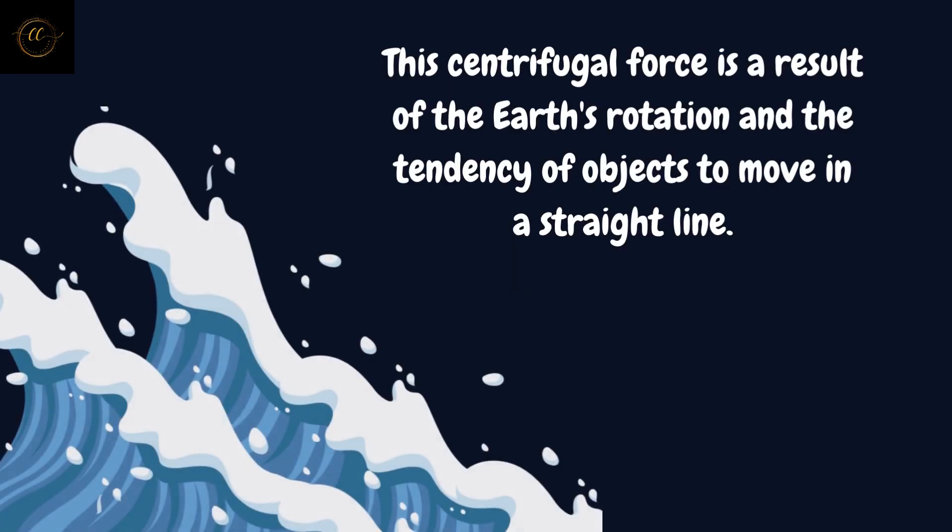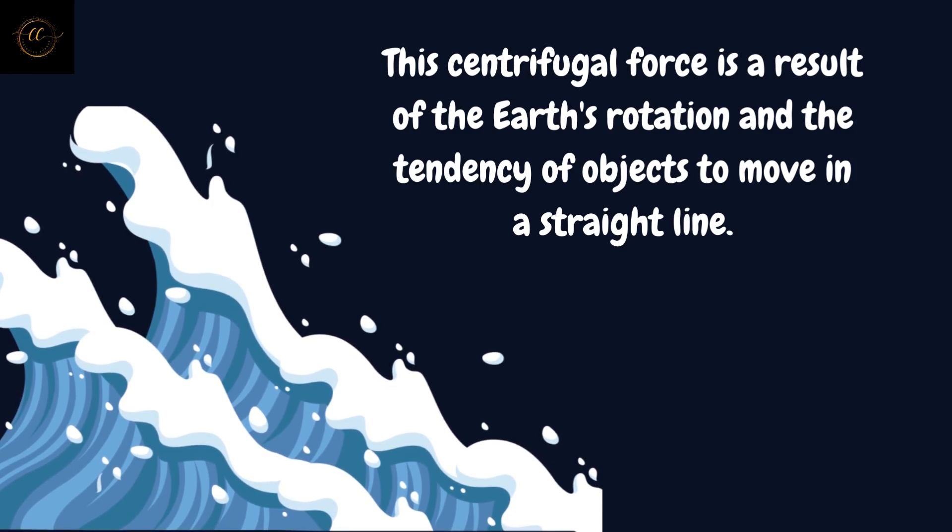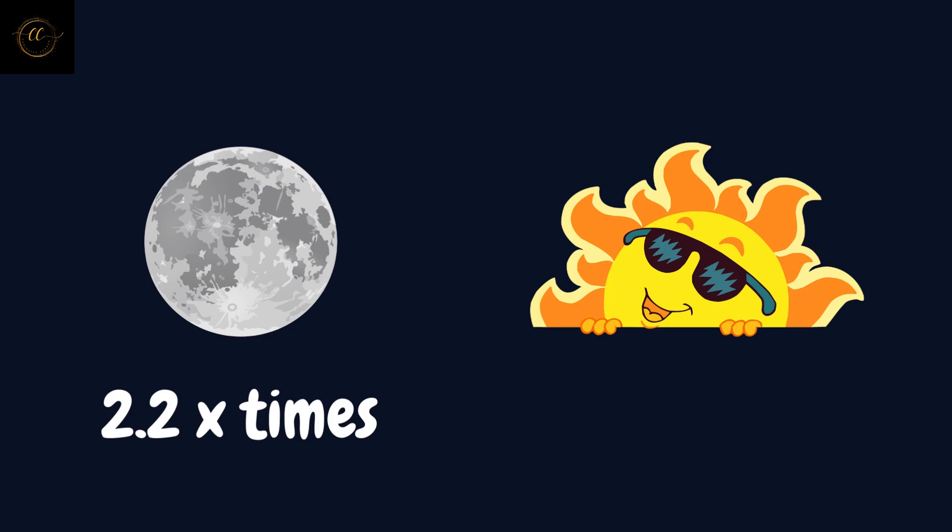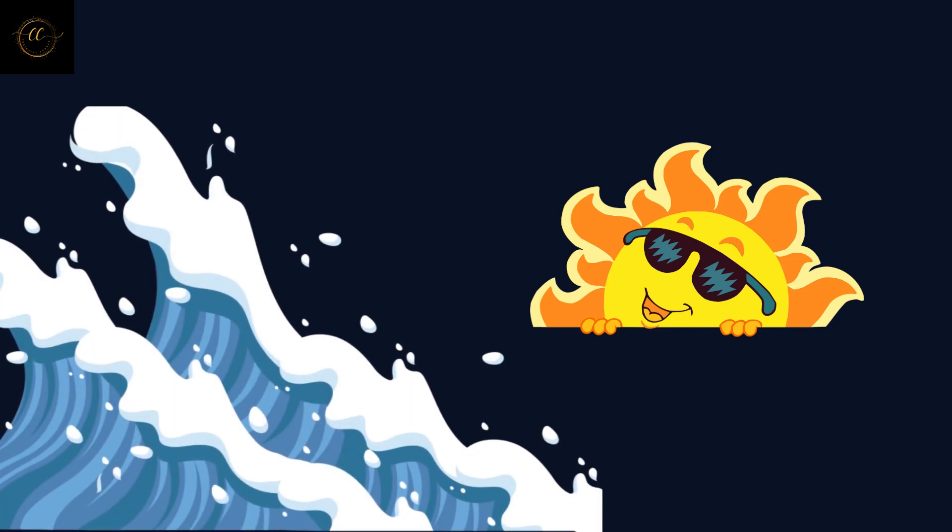This centrifugal force is a result of the earth's rotation and the tendency of objects to move in a straight line. Since there are high tides on the two sides, there would be low tides in the other two sides. While the moon's gravitational force is about 2.2 times stronger than that of the sun, the sun's gravitational pull still plays a role in shaping tidal patterns.